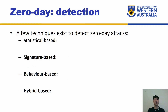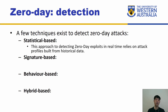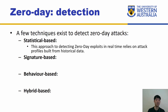How do we go about detecting zero days? Protecting against them is much more difficult, so you have to start with detection first. There are four techniques. The first is statistical-based: this approach to detecting zero day exploits in real time relies on attack profiles built from historical data. We build profiles of past attacks and check whether another attack might occur. For example, if you saw a trend of Adobe being exploited by a zero day attack twice every six months, you can estimate that another two attacks will happen in the next six months. This can be a flawed approach but can provide some insight based on trends.